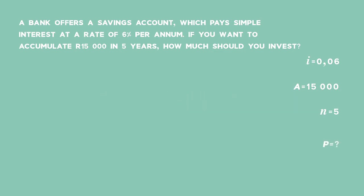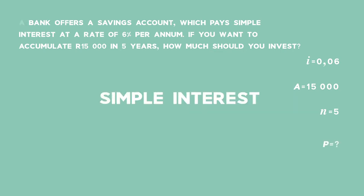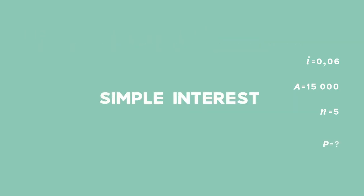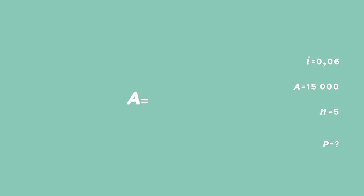What you first need to note is that the account pays simple interest, which tells you the formula you need to use. And that is: A equals P brackets 1 plus i multiplied by n, close brackets.